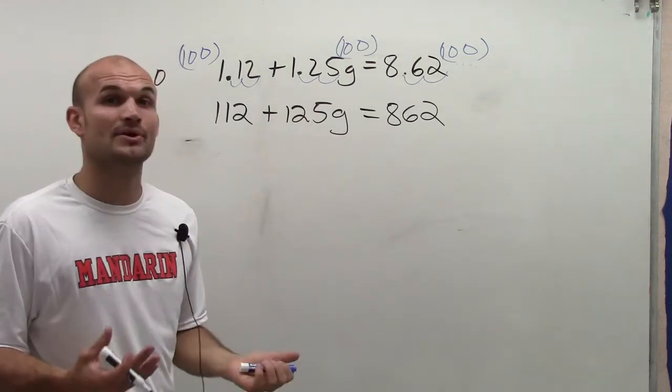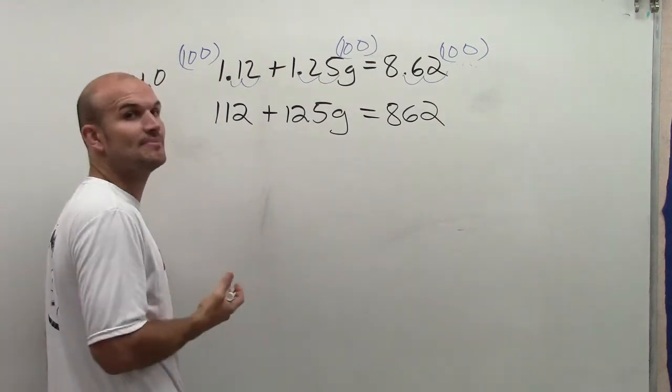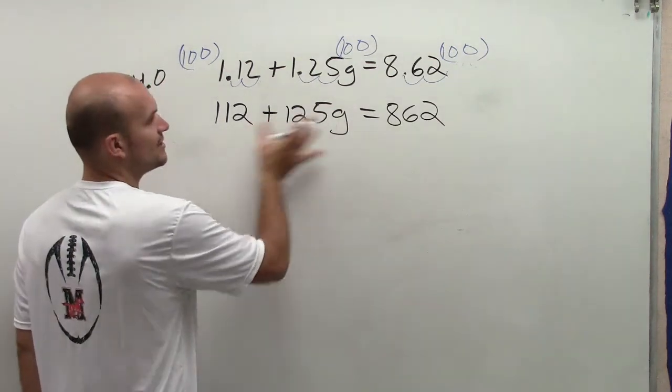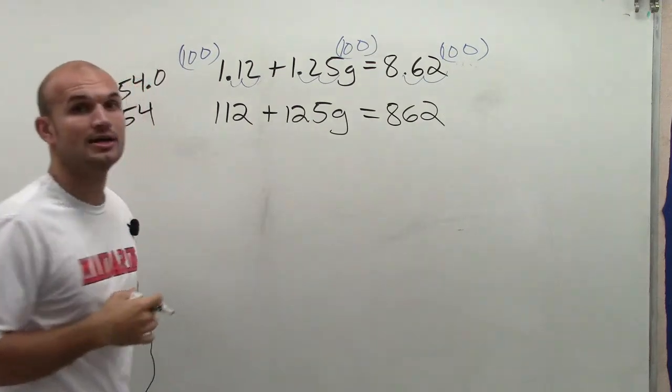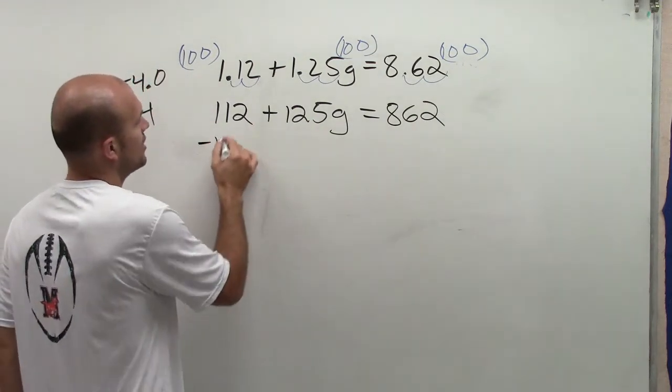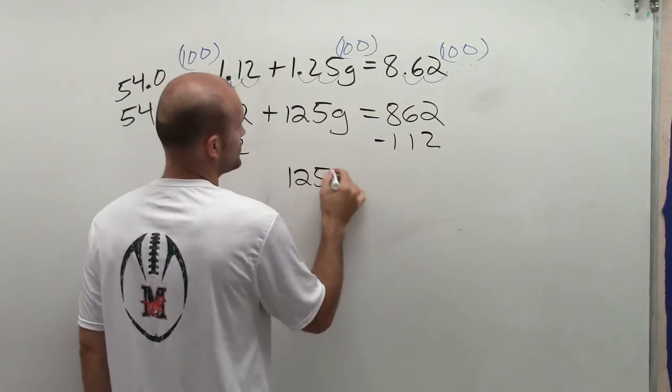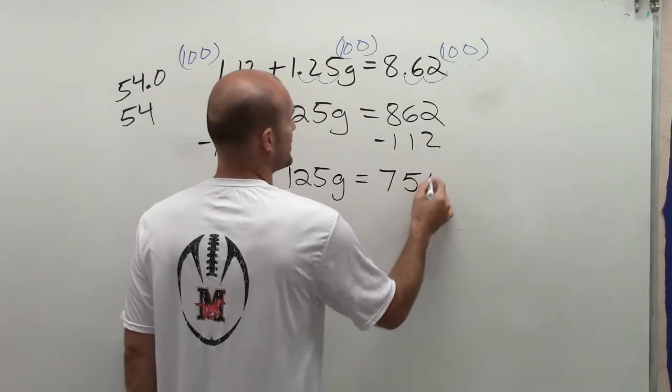So now I just have some bigger numbers, but I can just use my mathematics to help me out, right? Our one-step, two-step equations. So in here, I have a two-step equation. To undo adding 112, I'm going to subtract 112 from both sides. So I get 125g equals 750.